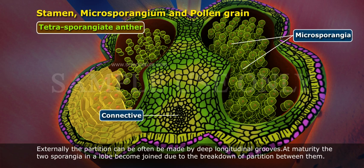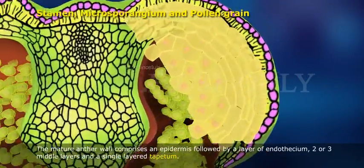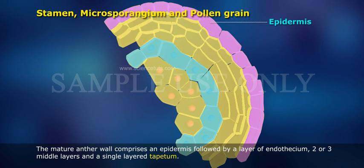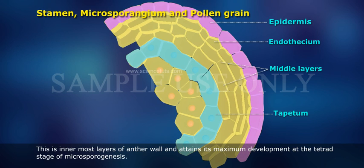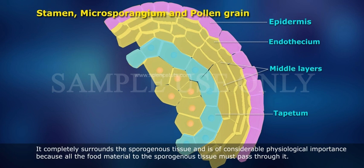At maturity, the two sporangia in a lobe become joined due to the breakdown of the partition between them. The mature anther wall comprises an epidermis followed by a layer of endothecium, two or three middle layers and a single-layered tapetum. This is the innermost layer of the anther wall and attains its maximum development at the tetrad stage of microsporogenesis. It completely surrounds the sporogenous tissue and is of considerable physiological importance because all the food material to the sporogenous tissue must pass through it.